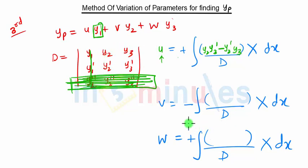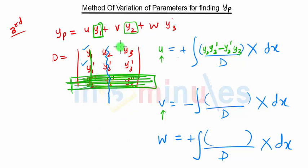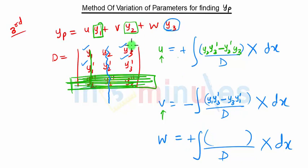Similarly, to find v: since v is with y2, we ignore the column of y2. Taking the determinant of the remaining four terms gives y1·y3' minus y3·y1'. Then for w: since w is with y3, we ignore the column of y3. The determinant of the remaining four terms gives y1·y2' minus y2·y1'.